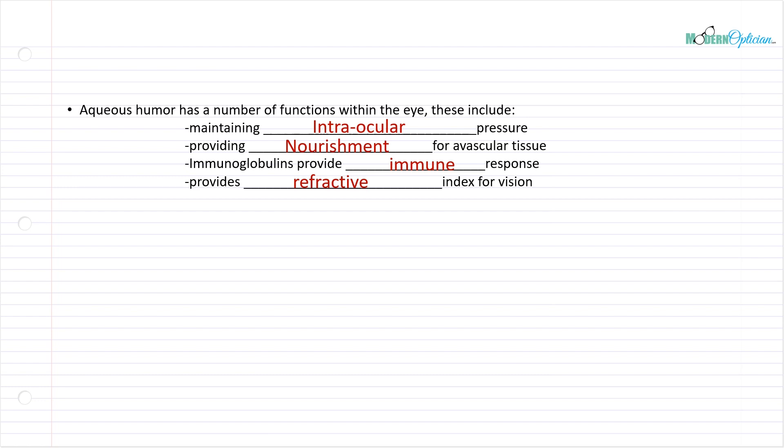It also provides a certain amount of refractive index for vision. When we talk about vision as a whole, we can talk about a schematic eye. The eye has been figured out to have different refractive surfaces, refractive indices in the different fluids and things like that. It's something we're going to talk about a little bit more in optics. The aqueous humor also provides a little bit of refractive index to give the eye its natural focusing power.